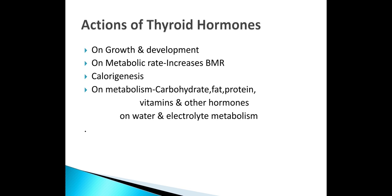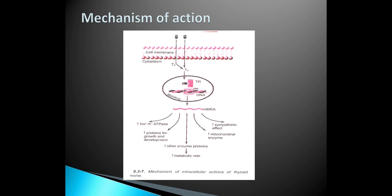Action refers to what thyroid hormones do on the whole body system. They act on various sites including the nucleus, mitochondria, and plasma membrane. They enter the cells and bind to receptors in the nuclei. The hormone-receptor complex then binds to DNA to form mRNA. Formation of mRNA leads to the formation of a variety of proteins. Proteins serve as structural and functional components of the cell and modify cell function.